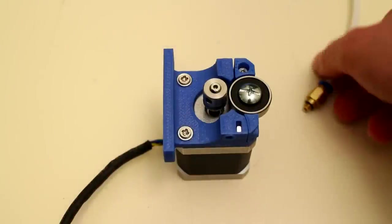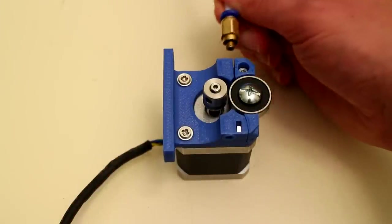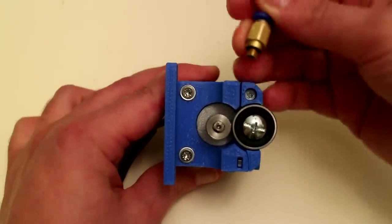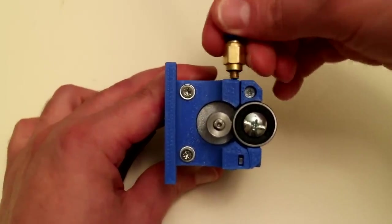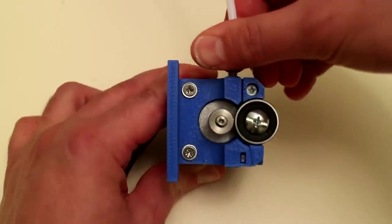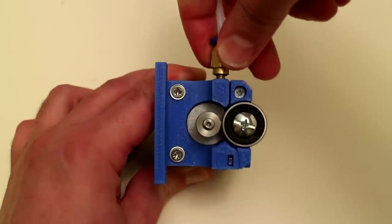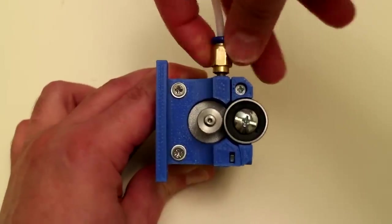And finally we can thread the PTFE push fit connector to the top of the Bowden mount. The thread on the brass fitting here will carve a thread within the top of the Bowden mount. So make sure it's lined up straight and thread it in.